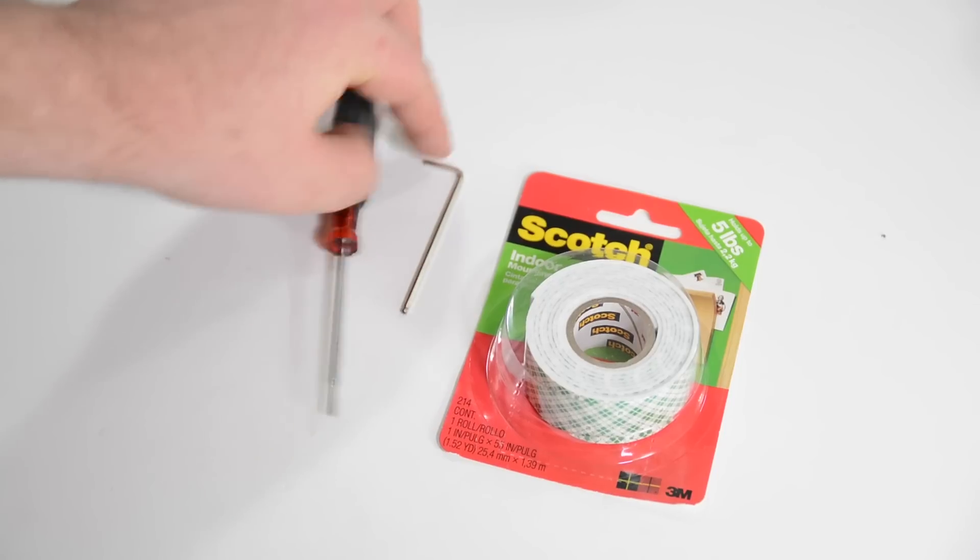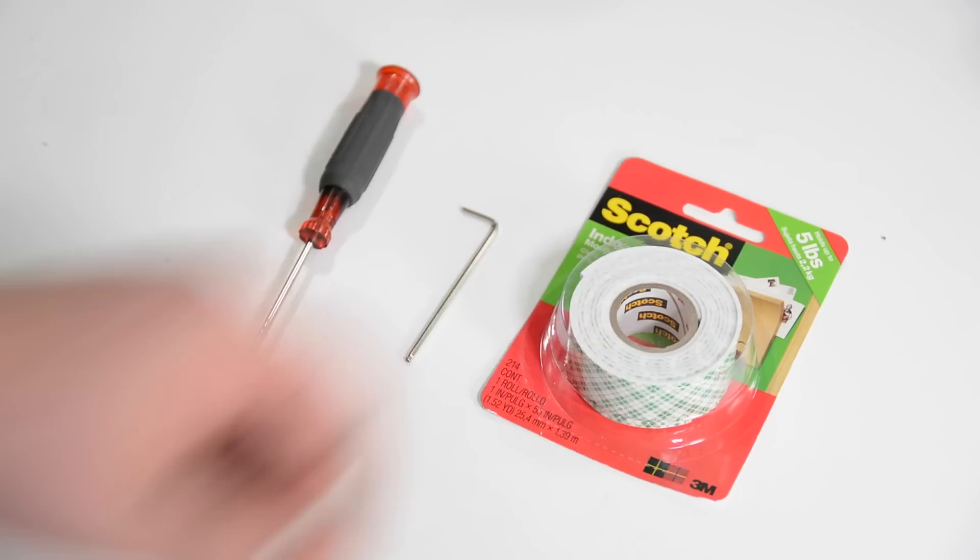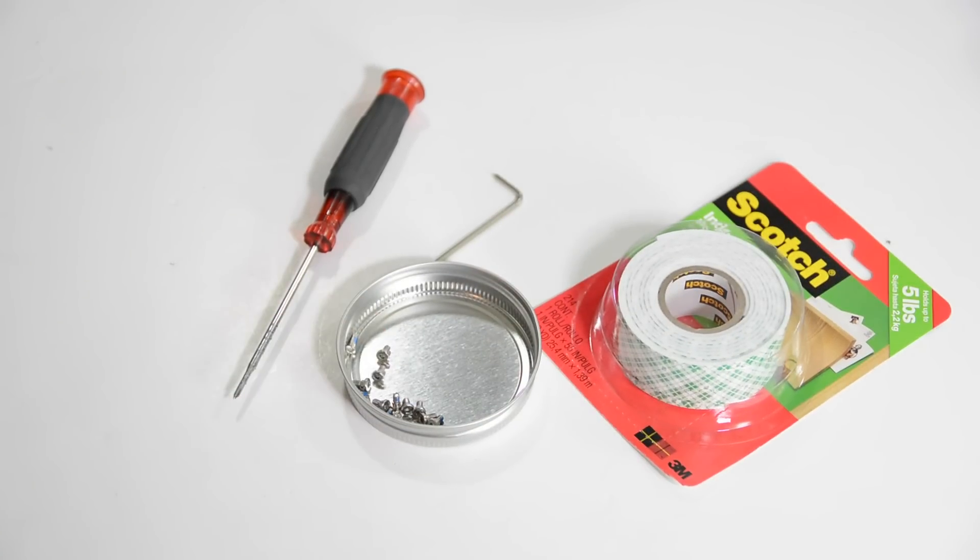The tools you'll need for this project is a Phillips screwdriver, the allen wrench that came with your Phantom 2, 3M scotch tape, a container for your screws, and scissors or snips to cut the zip ties.